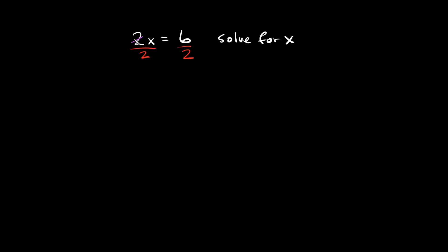So these 2's cancel out, the one on the top and the bottom. On this side, we're just left with x, and this is equal to 6 over 2. If we wanted to, we could just leave it like this as 6 over 2, or we could simplify this to just 3. Either one of these would work.